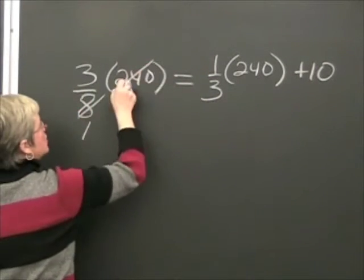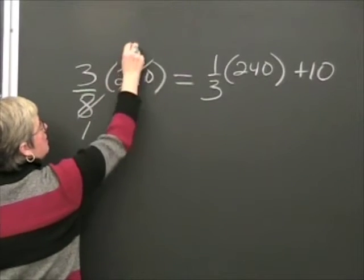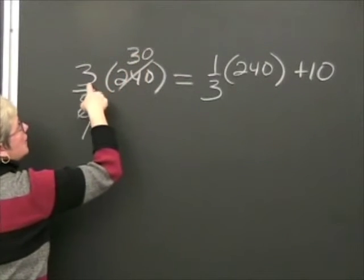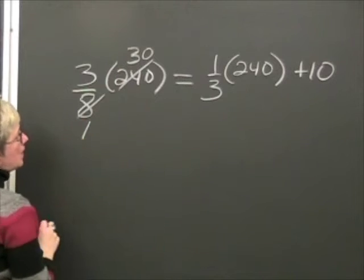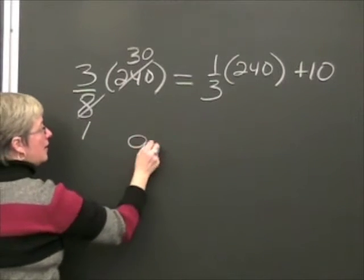Let's see here. Eight goes into eight once, eight goes into 240 thirty times. So we're looking at three times thirty over one, which is 90 over one, which is 90.